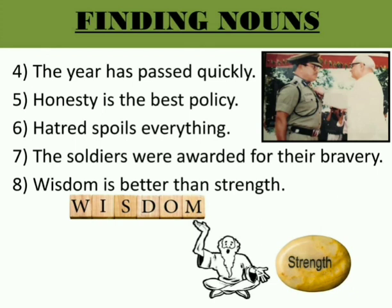Next sentence: 'Honesty is the best policy' — honesty and policy are the nouns; honesty is an abstract noun. Sixth sentence: 'Hatred spoils everything' — hatred and everything are nouns; hatred is an abstract noun and everything is a common noun. Seventh sentence: 'The soldiers were awarded for their bravery' — soldiers and bravery are the nouns; soldiers is a common noun and bravery is an abstract noun.